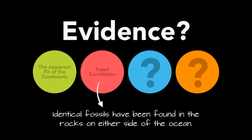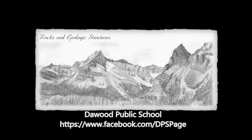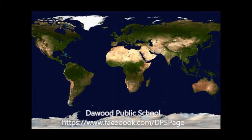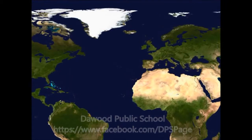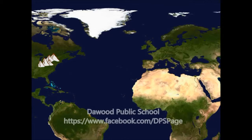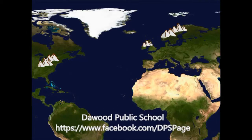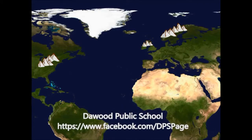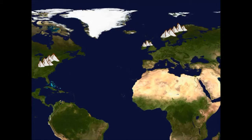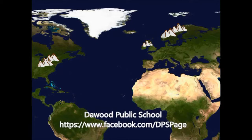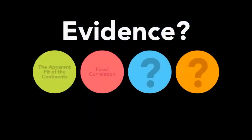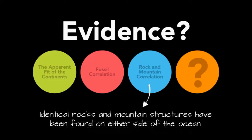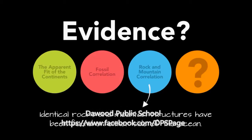Wegener knew he needed a stronger case, so he went back to the library and became fascinated by rocks and geologic structures like mountain ranges. He found that if you look at the mountain ranges in the northeastern United States and the mountain ranges in northern Europe, they match up perfectly — they are made of the same type of rock and the same age of rock. While it's possible the same rocks could have formed in two locations at the same time, geologically that's unlikely. A better explanation is that these mountains were once connected, and as the continents moved, they tore them in two. That becomes evidence number three: rock or mountain correlation — identical rocks and mountain structures found on either side of the ocean, suggesting the continents were once connected.